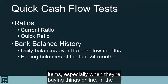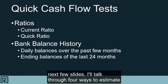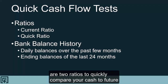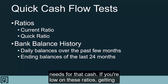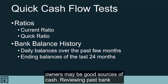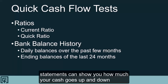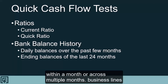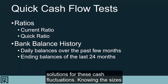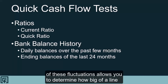In the next few slides, I'll talk through four ways to estimate whether you need loans. The current ratio and quick ratio are two ratios to quickly compare your cash to future needs. If you are low on these ratios, getting longer-term funding like real estate loans or funds from the owners may be good sources of cash. Reviewing past bank statements can show you how much your cash goes up and down within a month or across multiple months. Business lines of credit are good solutions for these cash fluctuations, and knowing the sizes of these fluctuations allows you to determine how big of a line you'll need.